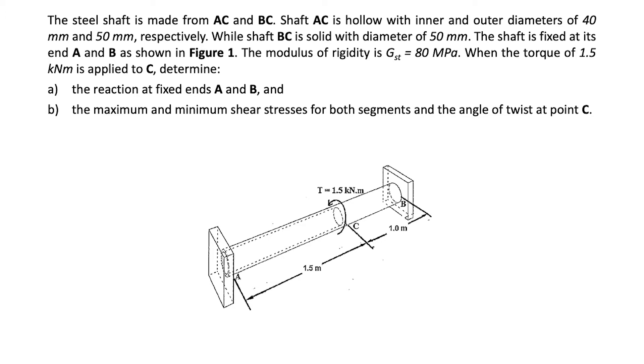While shaft BC is solid with diameter of 50 millimeters. The shaft is fixed at its end A and B as shown in the figure below. The modulus of rigidity of the shaft is Gst = 80 MPa.